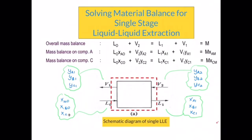After labeling your schematic diagram with the symbols — where A represents the solute, B represents the carrier, and C represents the solvent — and labeling the feed, raffinate, solvent, and extract streams, it's easy to come up with balance equations. You can have an overall mass balance, a mass balance on component A, and a mass balance on component C. Using these material balance equations, you can solve for the many unknowns involved.